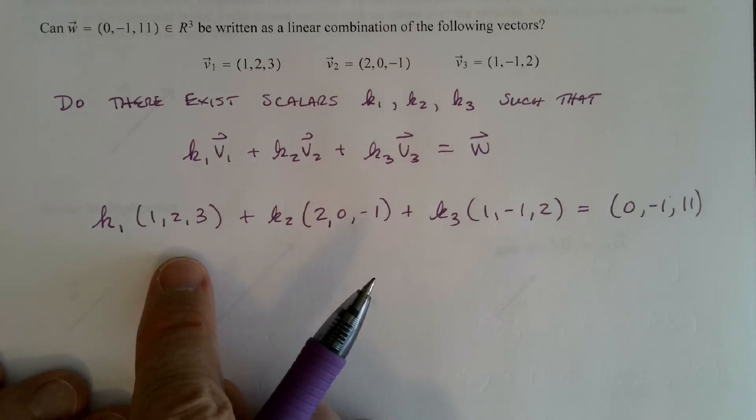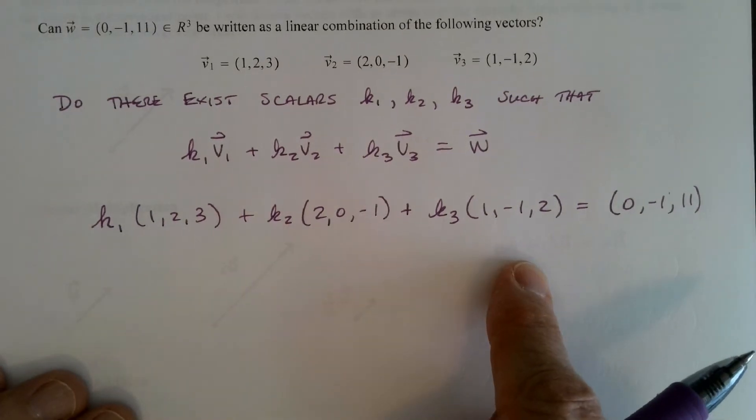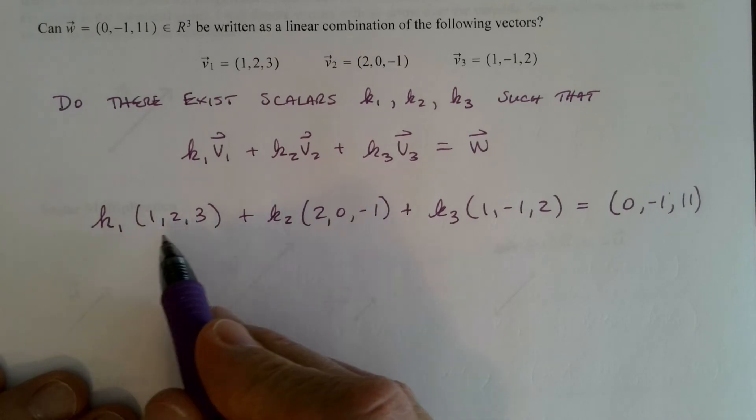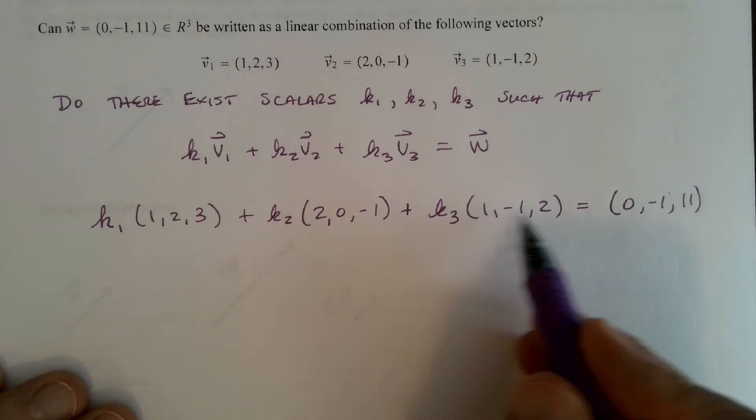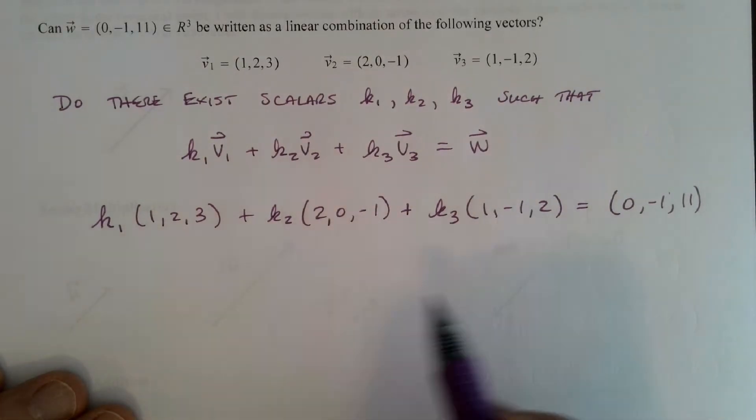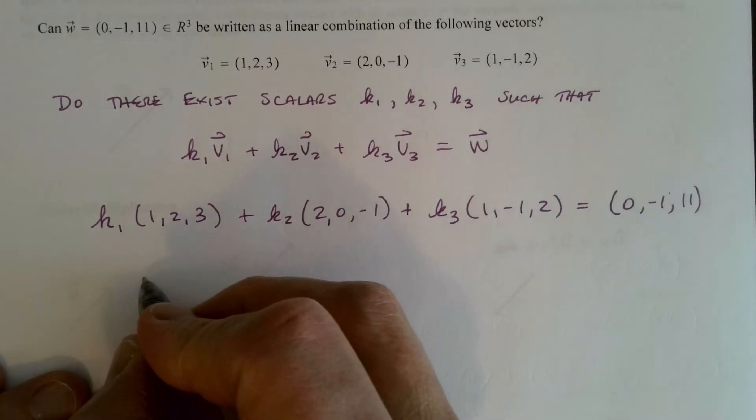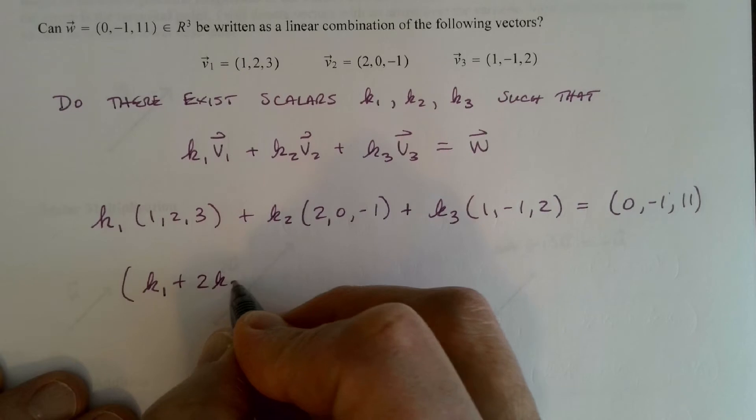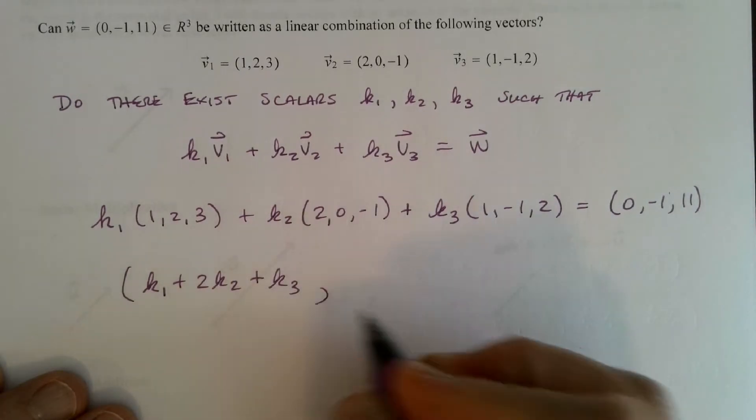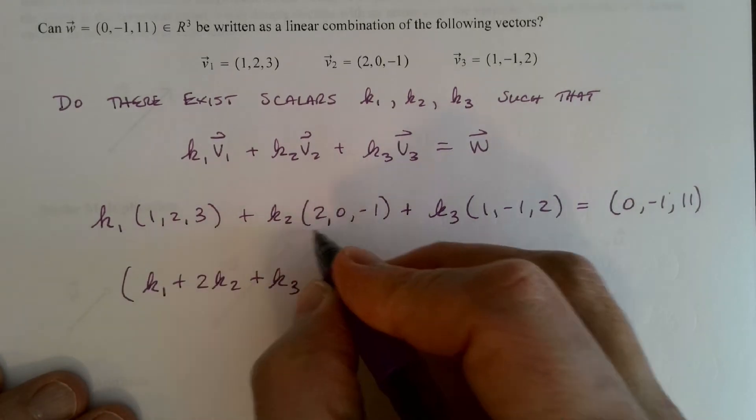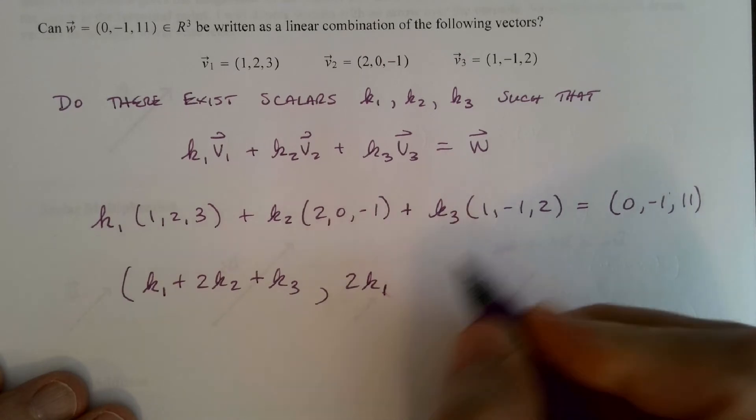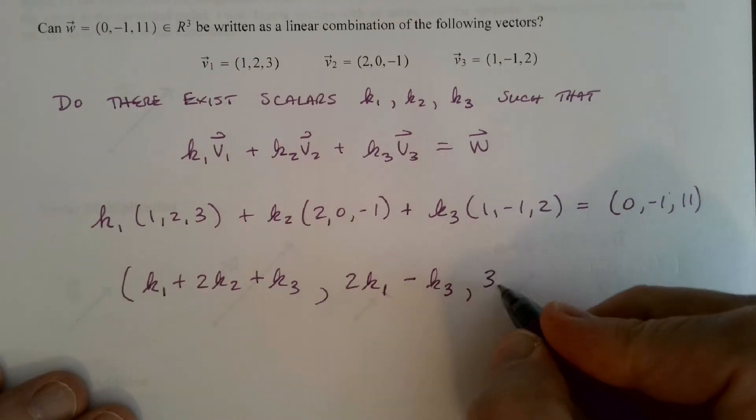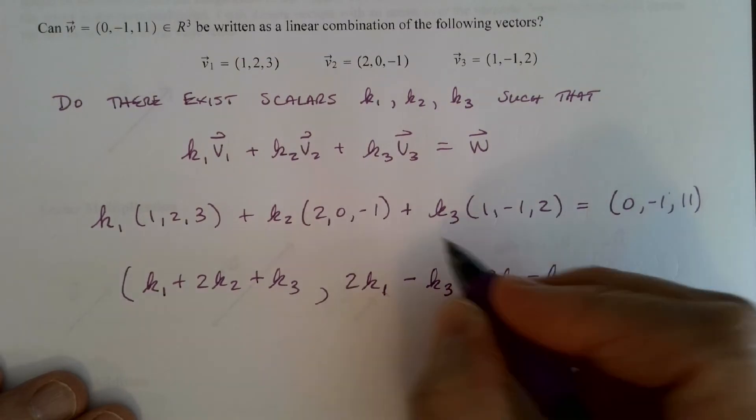Okay, so let's use what we know about scalar multiplication and vector addition to combine this as one vector. So scalar multiplication, I can multiply k1 by multiplying every component by k1, every component here by k2, and every component here by k3. And then adding these three resulting vectors together, I simply add the corresponding first components together, which would be k1 plus 2k2 plus k3. That would be the first component. The second component would be 2k1, k2 times 0 would be 0, and then minus k3.